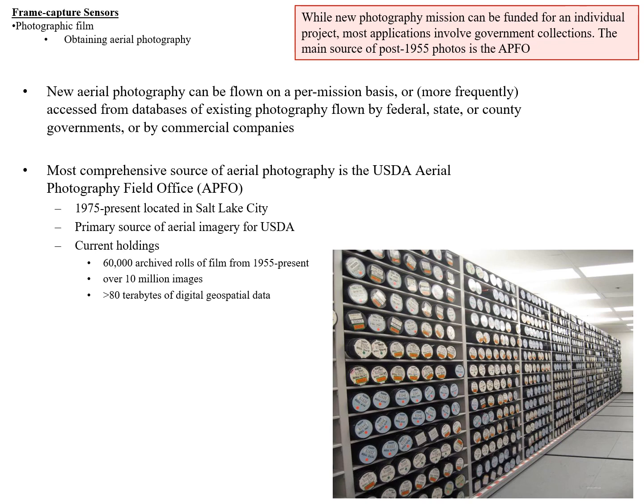You can fly new photography — these days that's probably going to be digital and not film. If you're looking at earlier periods, you might want to get historic aerial photography. The most comprehensive source of aerial photography is the USDA Aerial Photography Field Office in Salt Lake City, which is the primary source for aerial images for the USDA. It holds about 60,000 archive rolls of film from 1955 to the present — over 10 million images — and also about 80 terabytes of digital geospatial data.